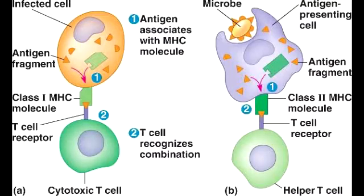What is MHC2 encoded by? MHC2 is encoded by HLA-DR, HLA-DP, and HLA-DQ.